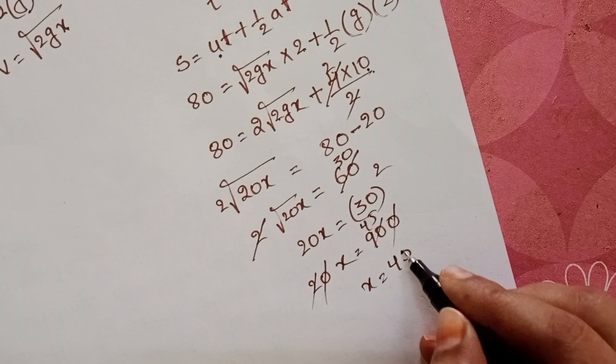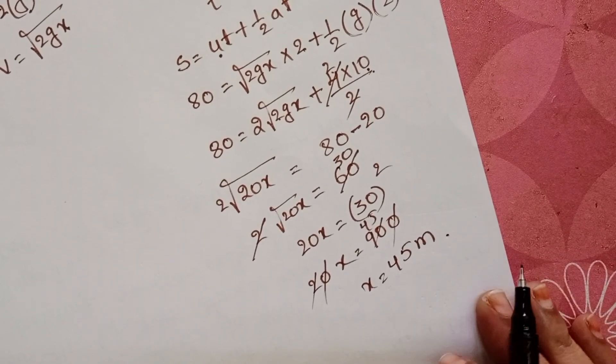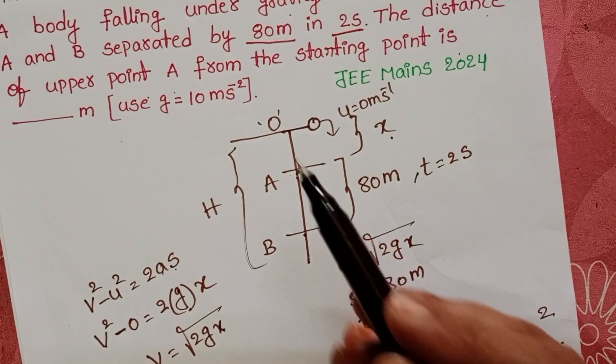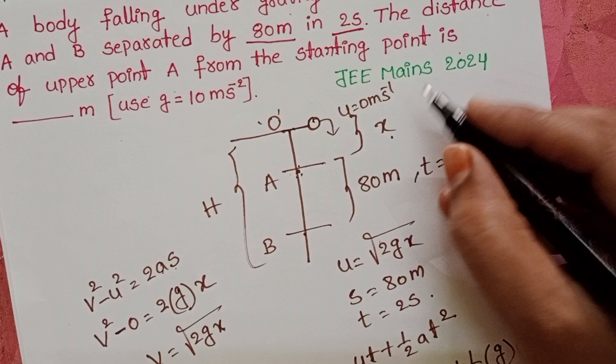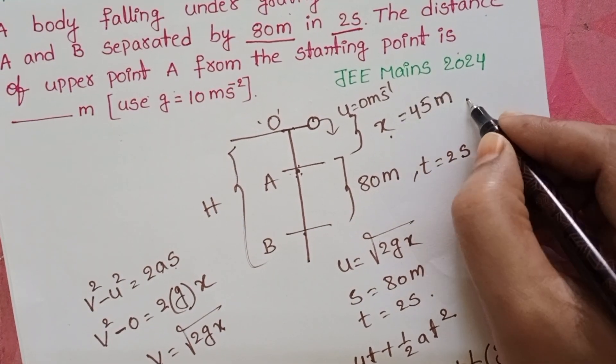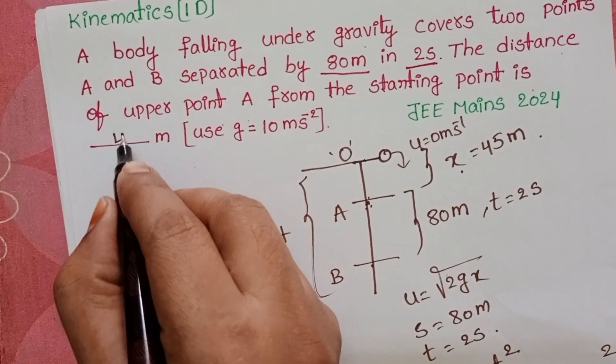X equals 45 meters. The distance of separation between these two points from O to A is 45 meters. The answer is 45.